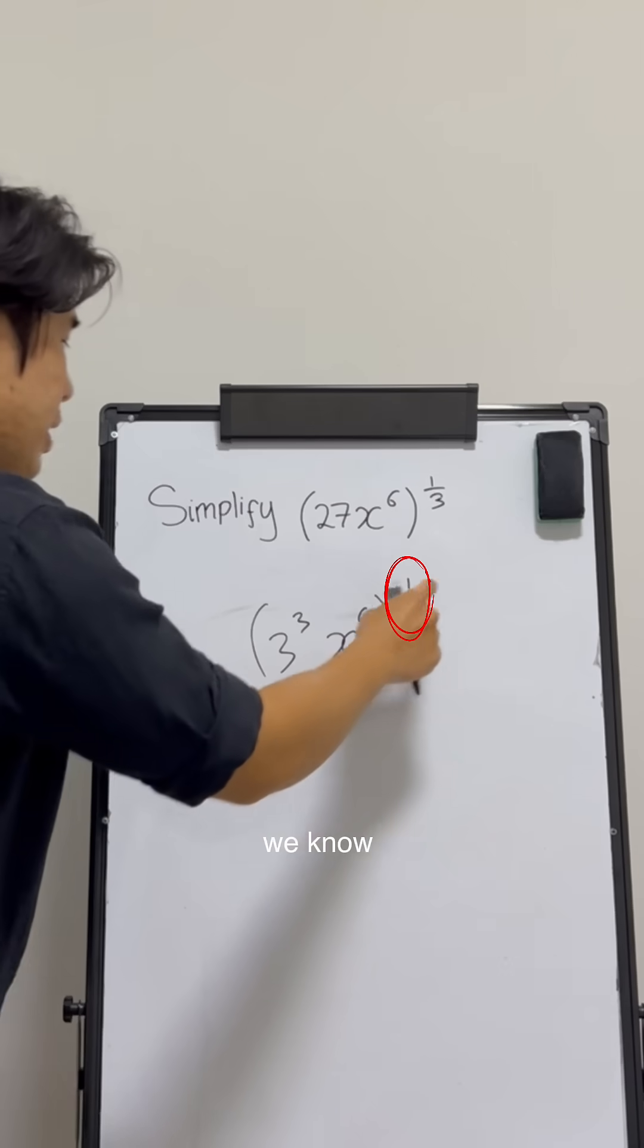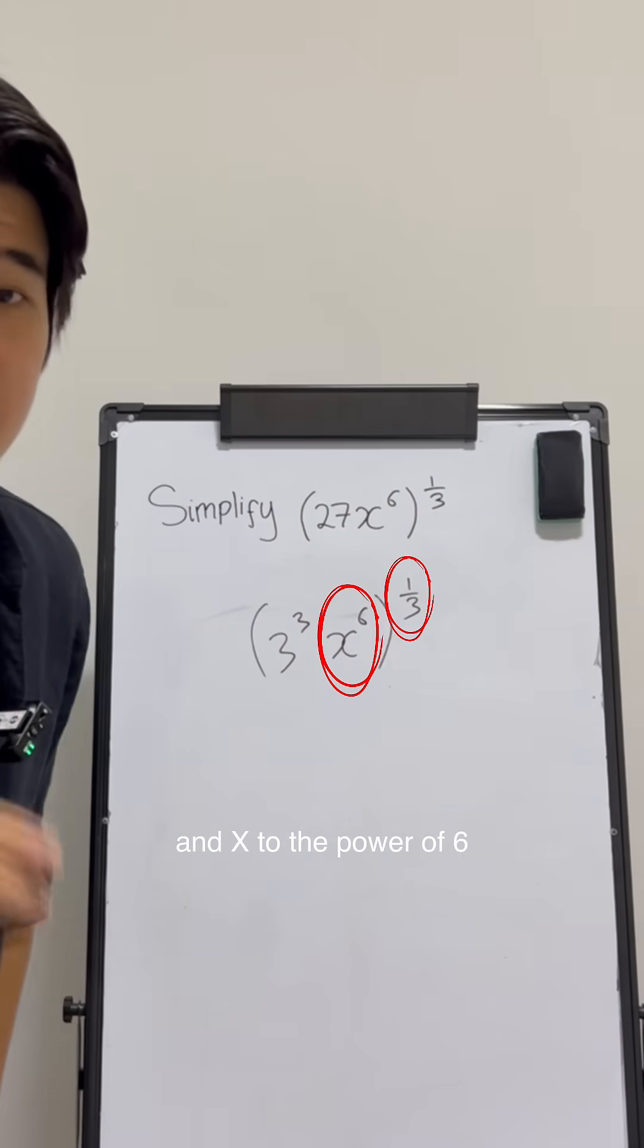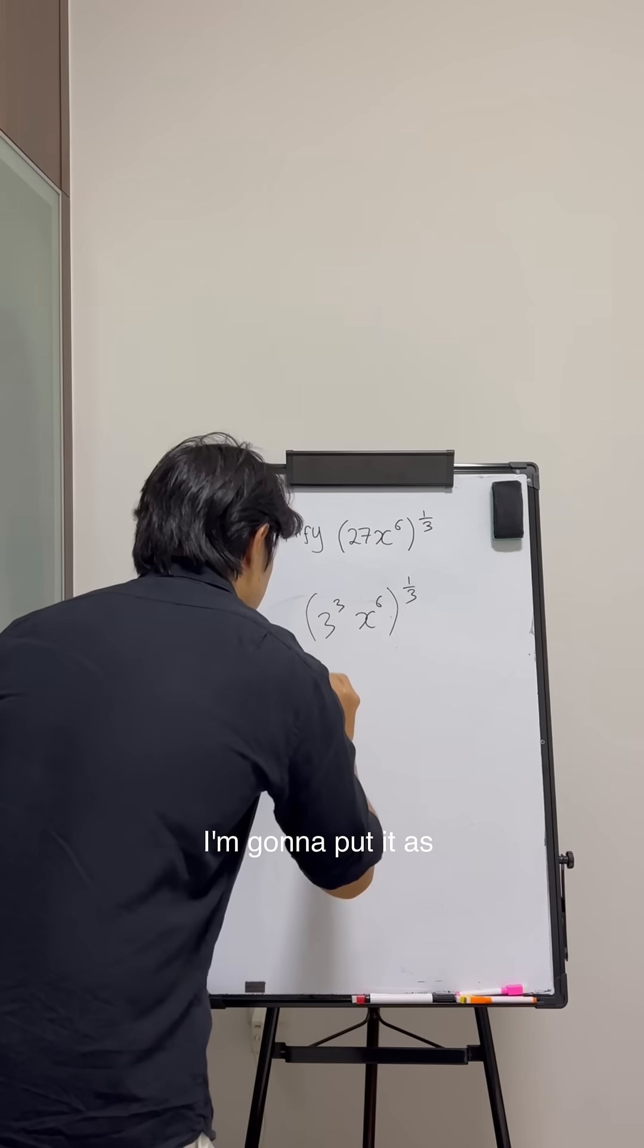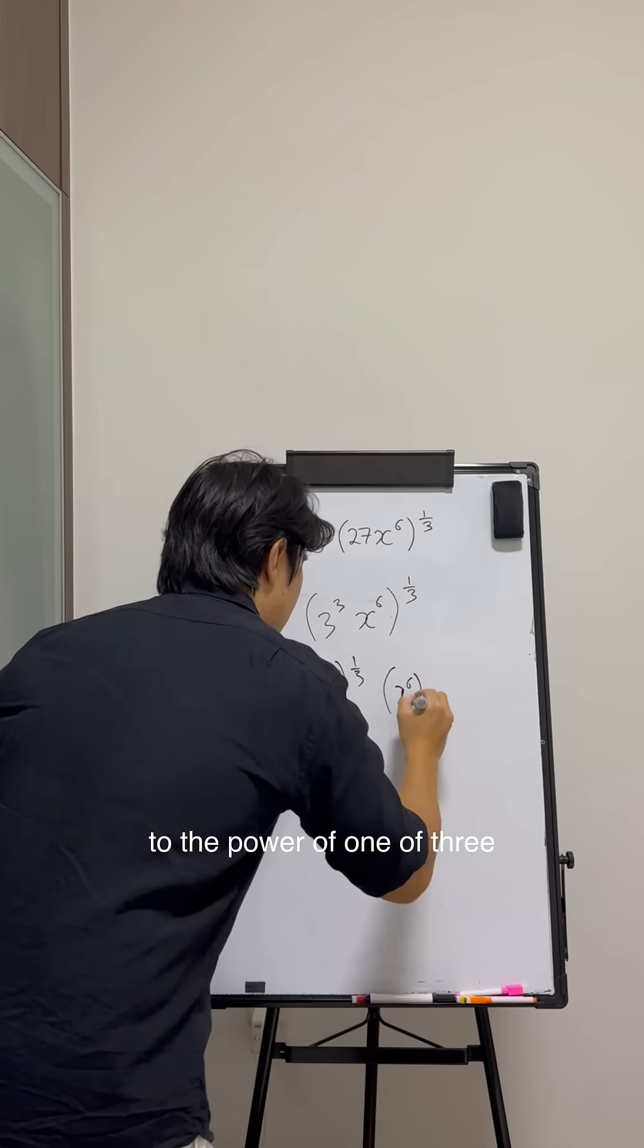Once you've got this, it's pretty simple. We know that this power belongs to both the 3 to the power of 3 and x to the power of 6. I'm going to write it as 3 to the power of 3, to the power of 1/3, and x to the power of 6, to the power of 1/3.